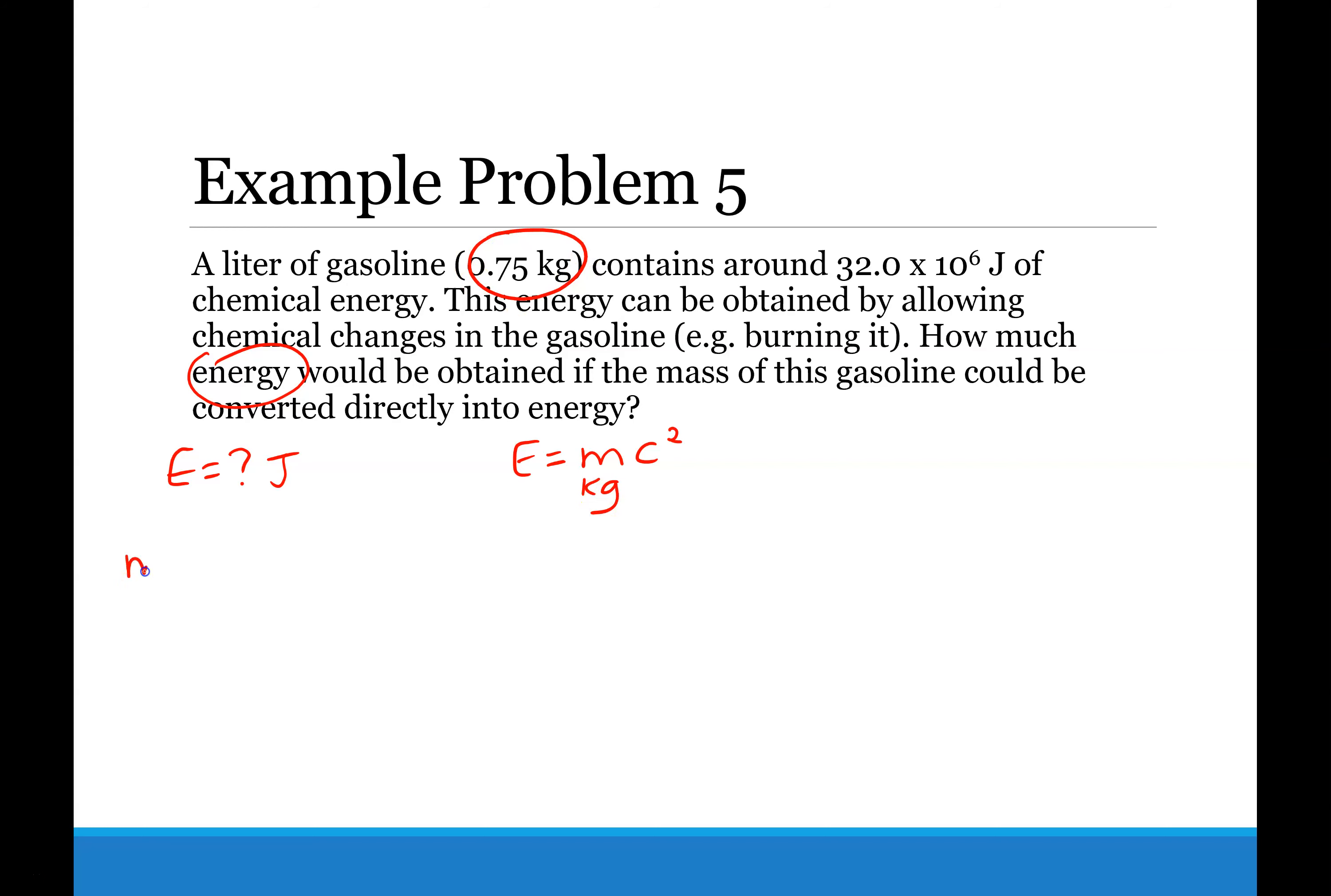We have that here. So M equals 0.75 kilograms. And C is the speed of light, which is 3.0 times 10 to the 8 meters per second.